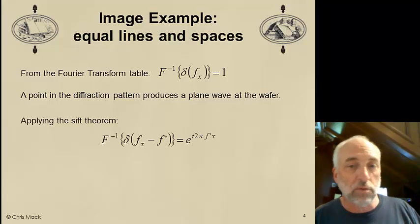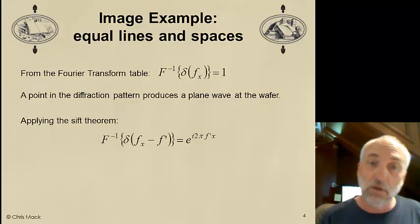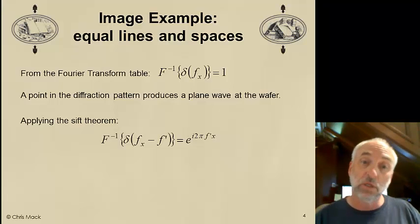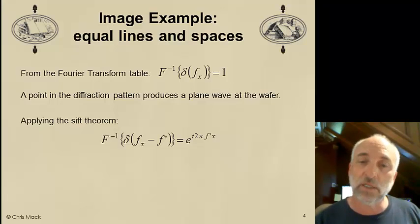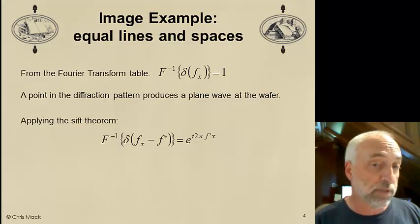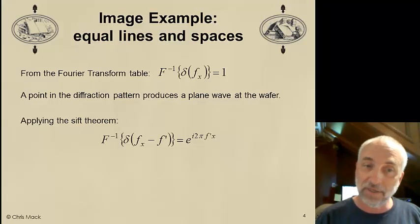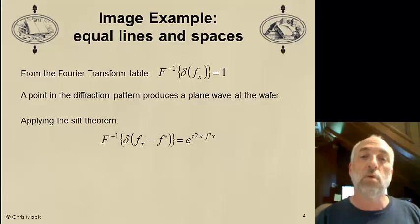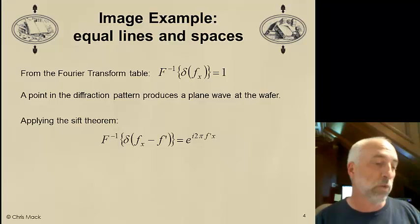And when I take the inverse Fourier transform, I get a plane wave of unit amplitude, normally incident on the wafer. Now, a point in the diffraction pattern produces a plane wave at the wafer. But, what about delta functions that are shifted off of the origin? Only the zero-order delta function is at the origin. The other delta functions are at frequencies of plus and minus one over the pitch. In other words, they're shifted.